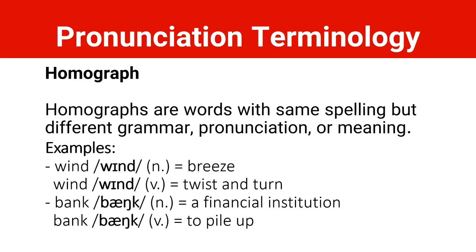For example, 'wind.' If I pronounce this word 'wind,' it becomes a noun meaning breeze. But if I pronounce it 'wind,' it becomes a verb meaning to twist or turn something. Wind (noun) vs. wind (verb). The next word is 'bank.' As a noun, a bank is a financial institution — a place where you save your money. But as a verb, 'bank' means to pile up. The pronunciation is the same — 'bank' — but the meaning and grammar class differ: one is a noun, the other a verb.